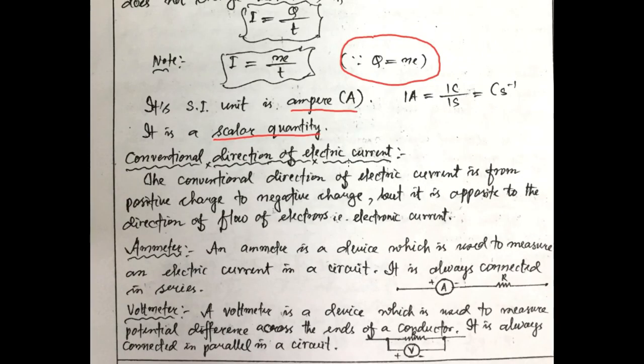Conventional direction of electric current. Conventional direction of electric current is from positive charge to negative charge. But it is opposite to the direction of the flow of electrons, i.e. electronic current.